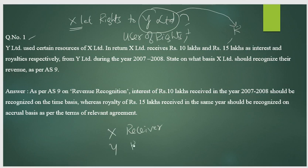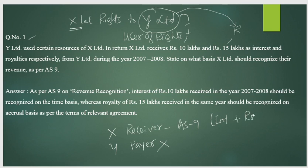AS-9 is applicable for the receiver's hands, not the payer's hands. So we leave out Y Limited. X Limited will receive interest plus royalty. These are called revenue. You have to identify whether interest and royalty are considered as revenue under AS-9, which is the recognition of revenue.